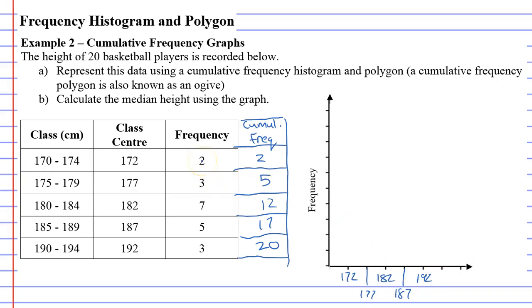All right, so what we need to do now is draw our bars going up to a certain frequency. Now, you'll notice the frequency goes up to 20. And I think if I go in 2s, that will reach 20 up the top. Let's see how we go. So, 0, 2, 4, 6, 8, 10, 12, 14, 16, 18, and 20.